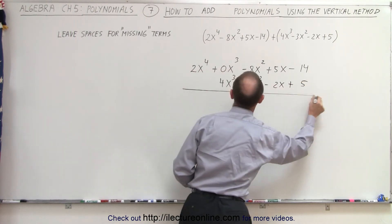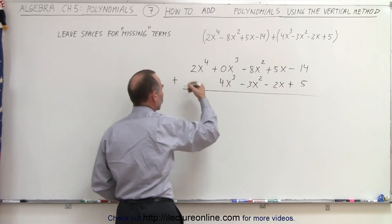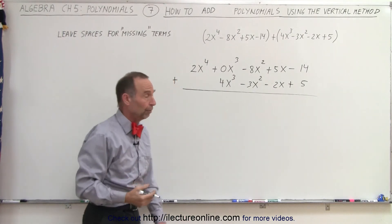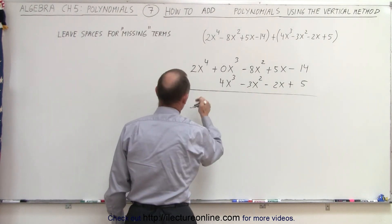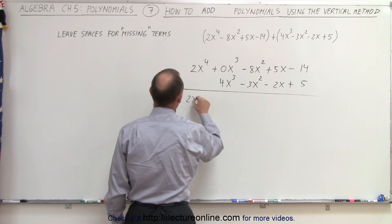And now, we simply add these together term by term, or like term by like term. So, here you can see there's only one x to the fourth term, so that's 2x to the fourth.